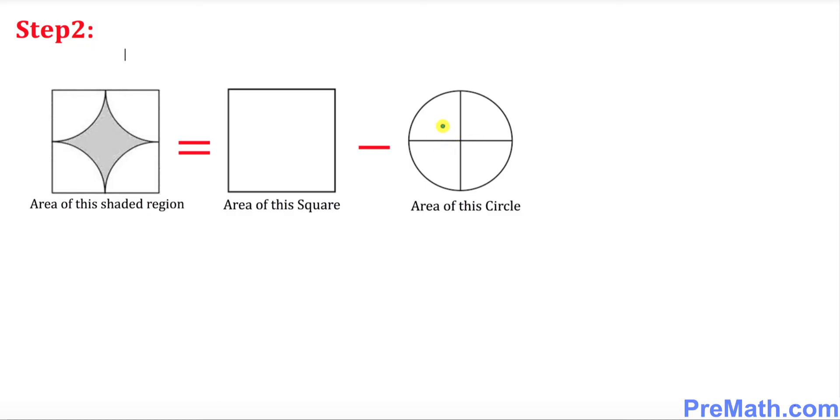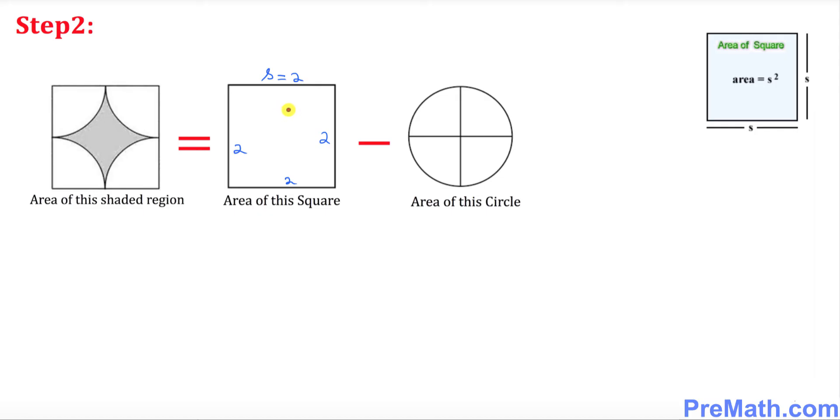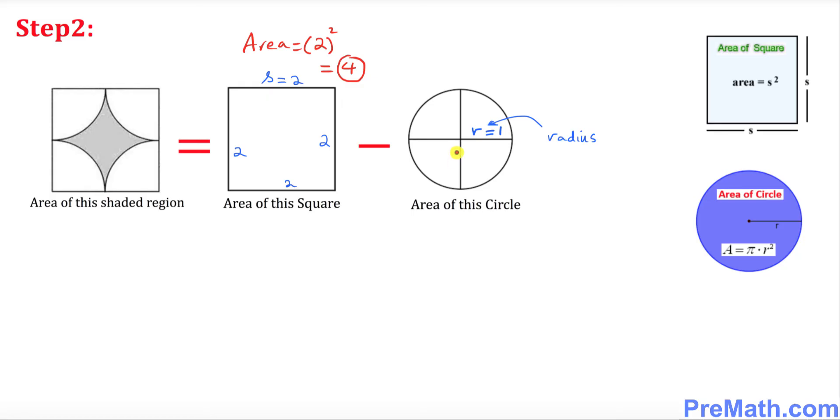Now we're going to find the area of this square. The formula for area is simply equal to the square of the side s, since each side is the same. So in our case, our area is going to be simply equal to 2 squared, which turns out to be 4. So our area turns out to be 4 for this square.